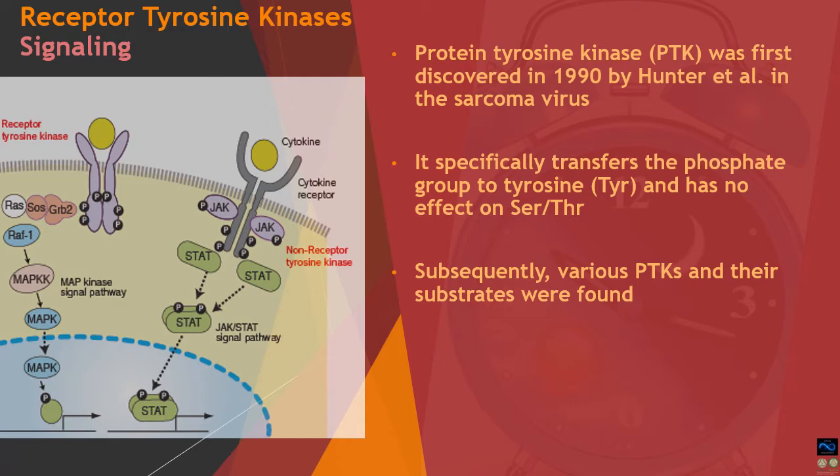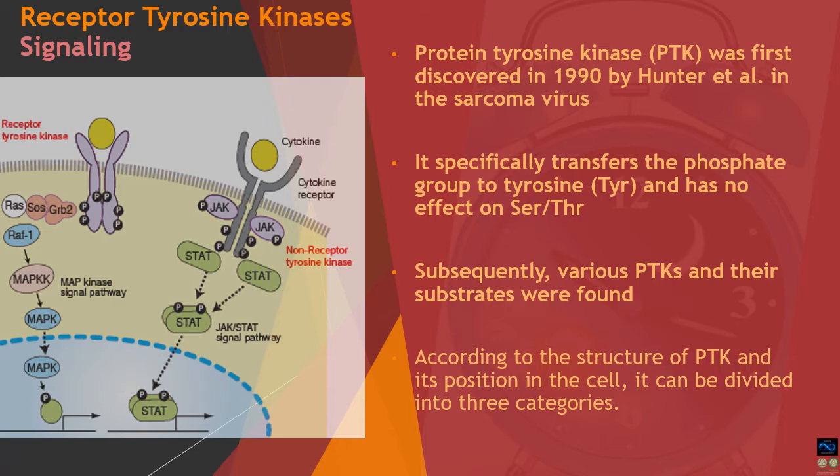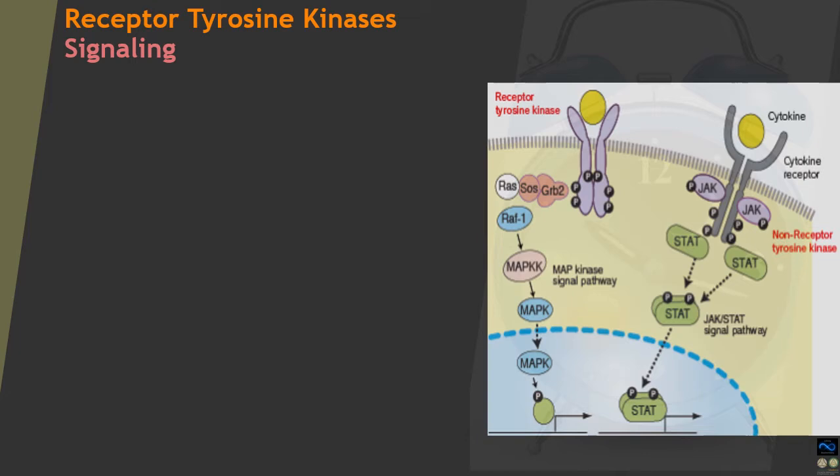Both categories relay information downstream by phosphorylation of specific tyrosine motifs at serine or threonine residues. According to their structure and position in the cell, protein tyrosine kinases can be further subdivided into three different categories, two of which are important: receptor tyrosine kinases and non-receptor tyrosine kinases. Non-receptor tyrosine kinases are also called the JAK-STAT signaling pathway.